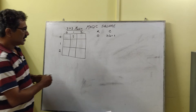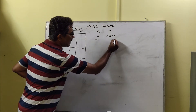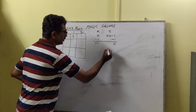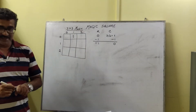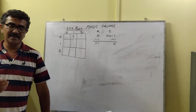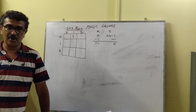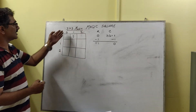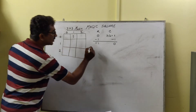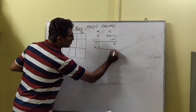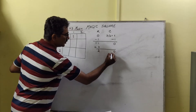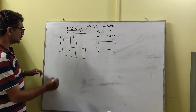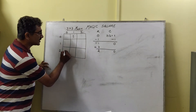Subtracting 1 from both row and column gives us row = -1, column = 0. Since -1 is not a valid index, we add the size of the matrix to this negative index. For a 3x3 matrix we add 3, giving us row = 2, column = 0. So the next number, 2, will be inserted at row 2, column 0.